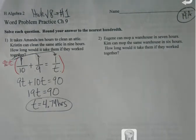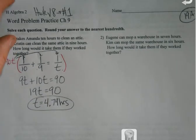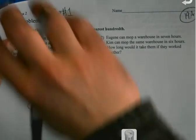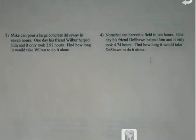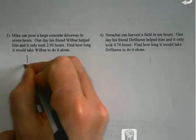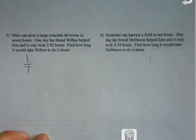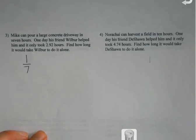The only thing you're going to have to be cautious of is sometimes I may give you how well they do it together. So just to kind of help keep you aware of this, if we were looking at number 3. Mike, individual, can pour a concrete driveway in 7 hours. One day, his friend Wilbur helped him, and it only took 2.92. Find out how long it will take Wilbur to do it alone.